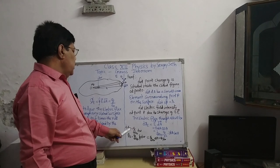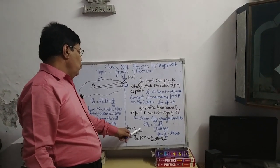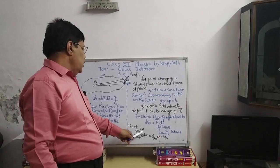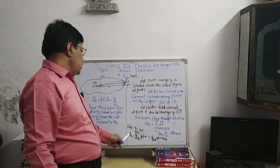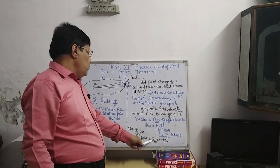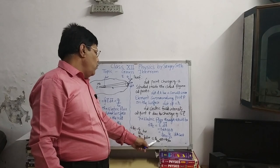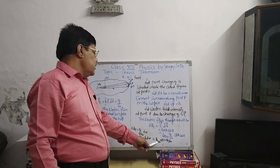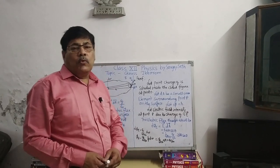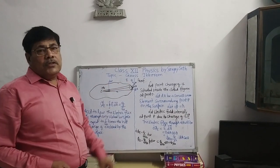So d phi E equals Q upon epsilon naught times E dot dA. This is the total electric flux through the surface. When solving, the integration of dA cos theta over R square gives 4 pi. The 4 pi cancels with the 4 pi in the denominator, so the result is Q upon epsilon naught. This is the proof of Gauss theorem.